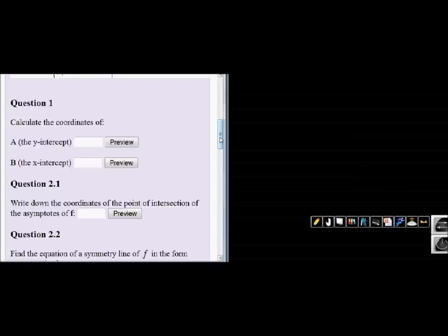The first question asks to calculate the coordinates of a, the y-intercept, and b, the x-intercept. It's quite simple. Let's write down the function: f(x) = 2/(x+3) - 2.